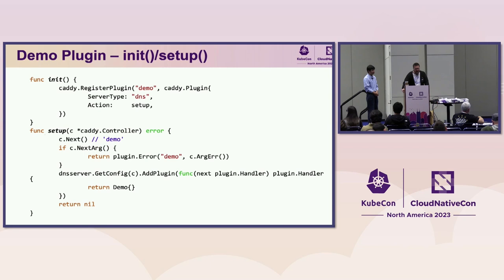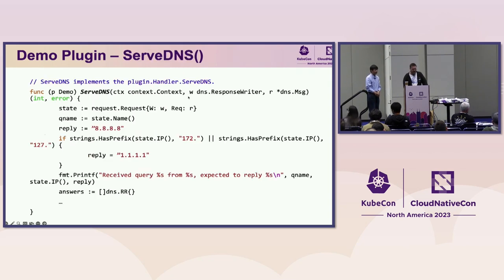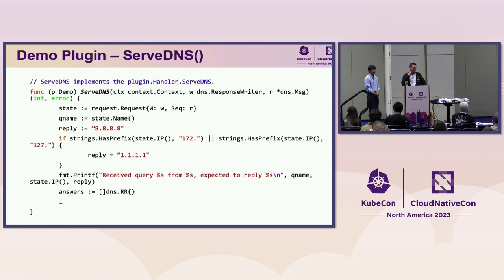The init function is super simple — register the plugin with the word 'demo' and call the setup function. That's when it parses the config and adds itself to the plugin chain. ServeDNS: we look at the request and if the source IP starts with 172 or 127, reply with one value; otherwise use the 8.8.8.8 reply. Add that to our list of responses and we're done. This is literally about 20 lines of code. Plugins are super easy to write — you only need to think about the specific functionality you care about and hand off everything else to the system.